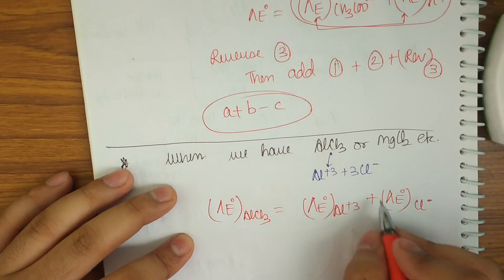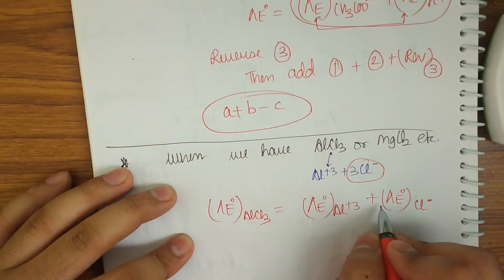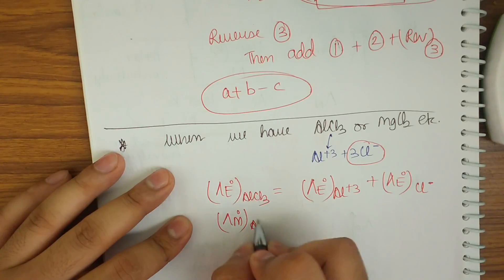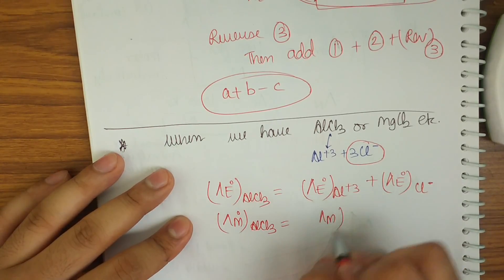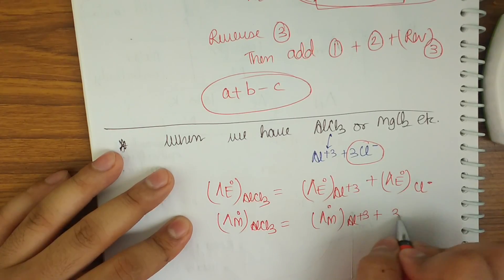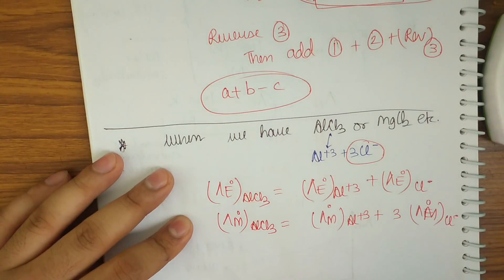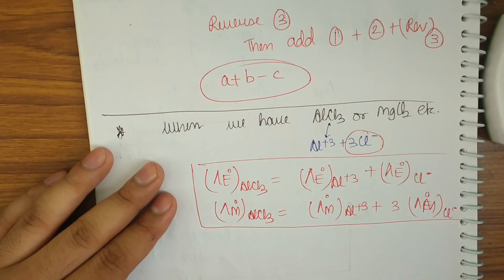For equivalent conductivity: λe° of AlCl3 = λe° of Al³⁺ + λe° of Cl⁻ — we do NOT place a coefficient of 3 here. But for molar conductivity: λm° of AlCl3 = λm° of Al³⁺ + 3 × λm° of Cl⁻ — here we must place the coefficient 3. This is a very important point to remember.